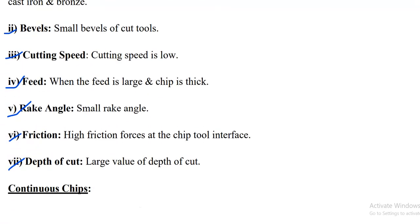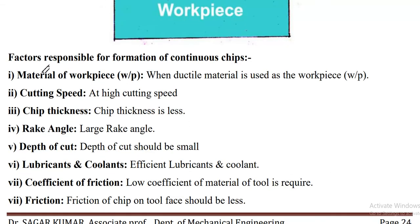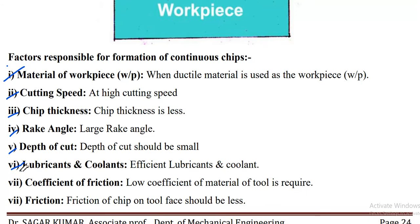For continuous chip formation, chip formation is continuous with no breakage — it forms continuously as the tool moves on the workpiece. The example is ductile material. Factors responsible for continuous chip formation include: ductile workpiece material, high cutting speed, less chip thickness, large rake angle, and small depth of cut.